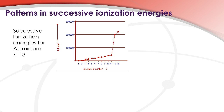Next we have this increase in ionization energy. The reason for this is that we have removed the three outer electrons from the third main energy level and we are now removing electrons from the second main energy level. It's closer to the nucleus, so there's a stronger electrostatic attraction, resulting in increased ionization energy.